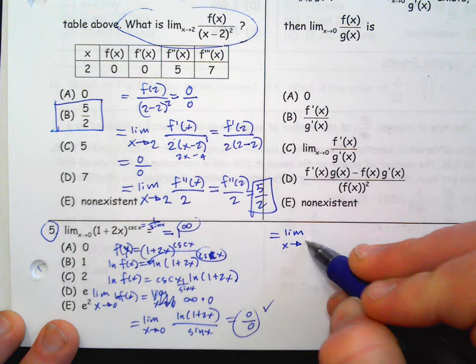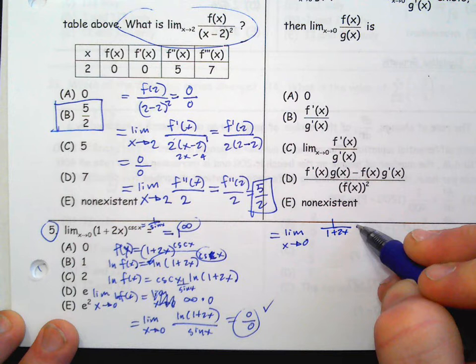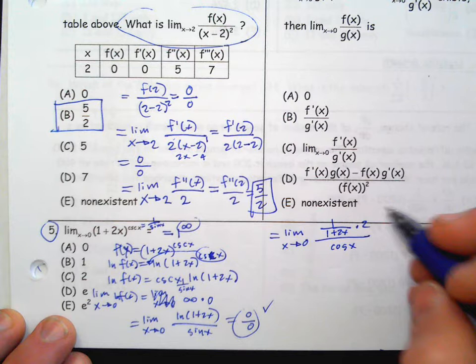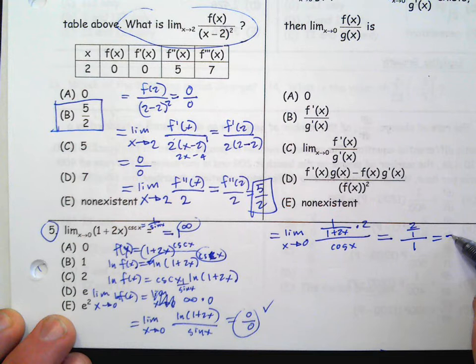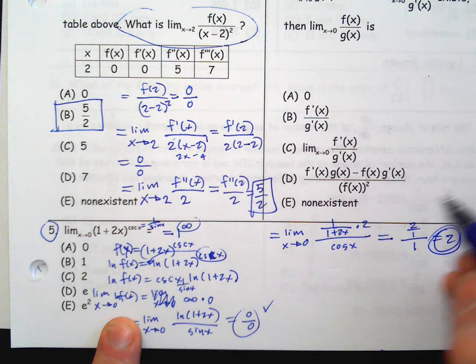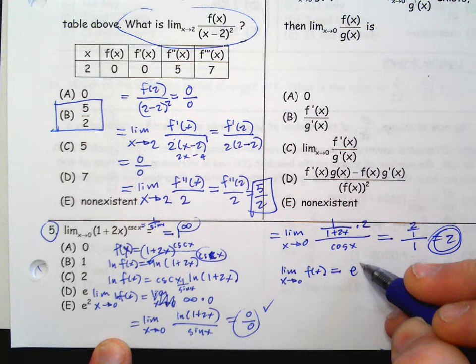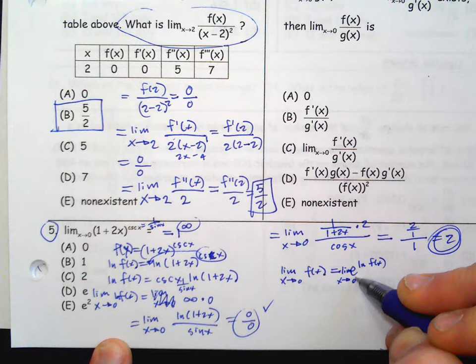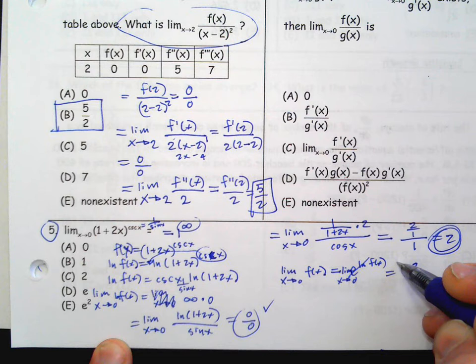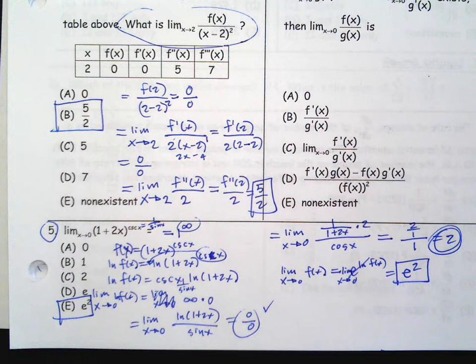Now we can do L'Hôpital's Rule. We haven't taken any derivatives yet — we've just been manipulating to get that 0 over 0. So the derivative of the top is 1 over (1 + 2x) times 2 by chain rule, over cosine(x). Now if you plug 0 in, you get 2 over 1, and cosine(0) is 1, so you get 2. But that's not the final answer — you've got to be careful because this is the limit of the natural log of f(x). We want the limit of f(x), so we have to exponentiate both sides, giving us e squared. That was your L'Hôpital's Rule — a quick review.